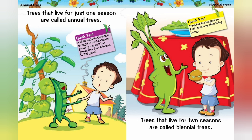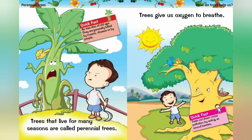Trees that live for just one season are called annual trees. Trees that live for two seasons are called biennial trees. Trees live the longest on earth than any other living being. Perennial Trees: Trees that live for many seasons are called perennial trees.